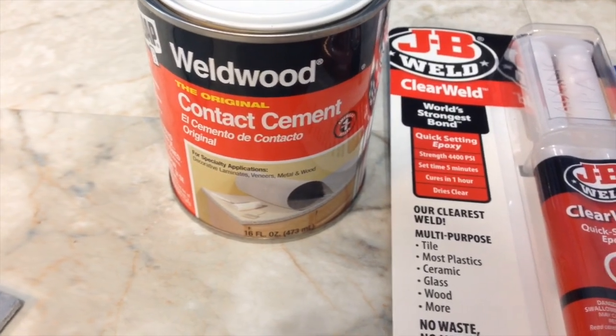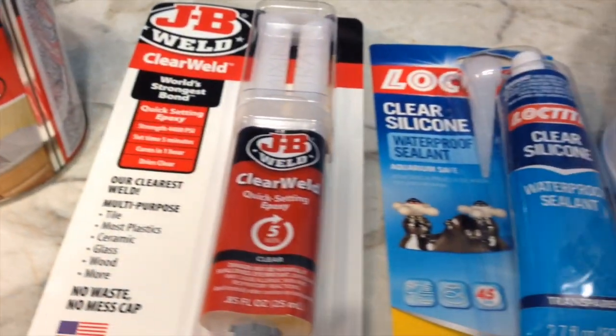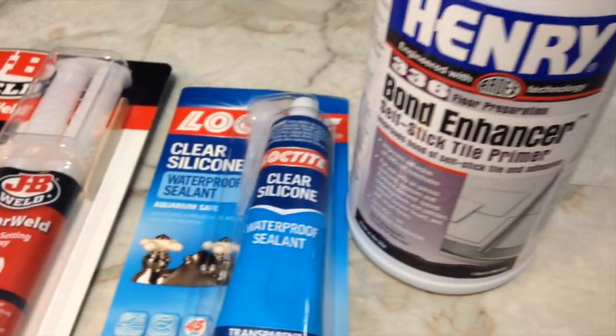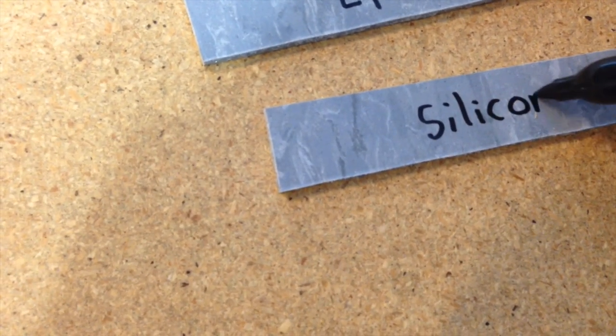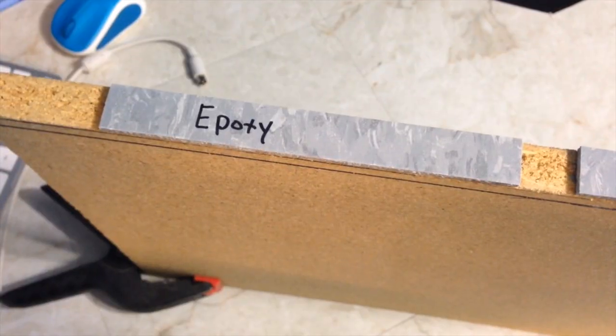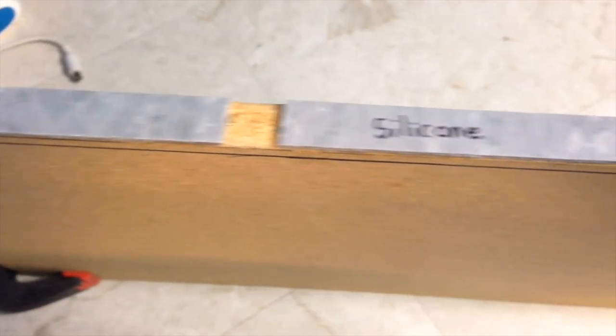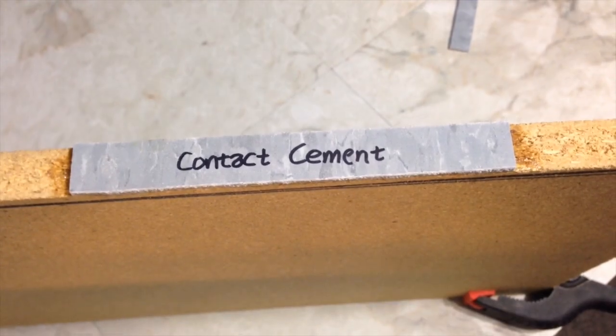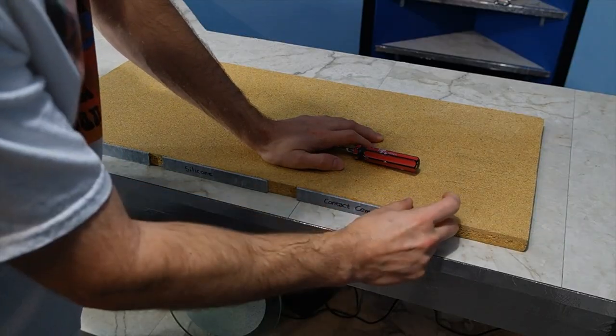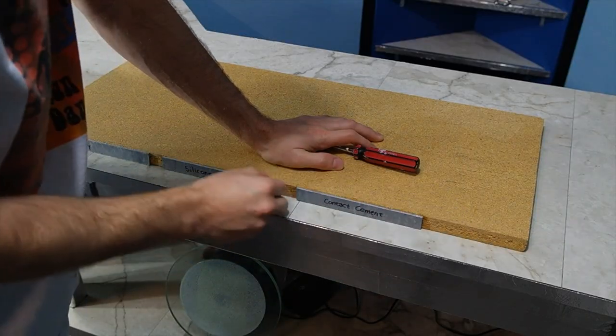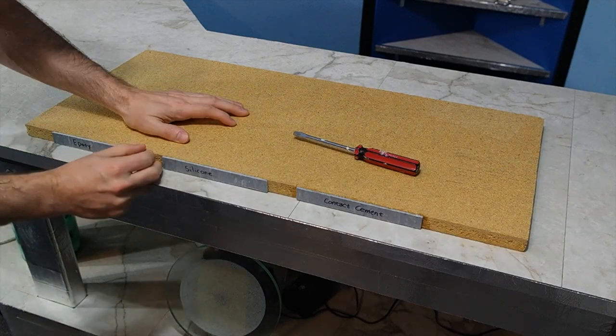Various people had suggested different adhesives to solve the problem. So I decided to perform a test with three different types: epoxy, silicone, and contact cement. I glued three strips onto an edge of some scrap board and let them all cure for 24 hours. The next day, I tried to pull them off by hand. The good news is that all three glues were strong enough to prevent that.